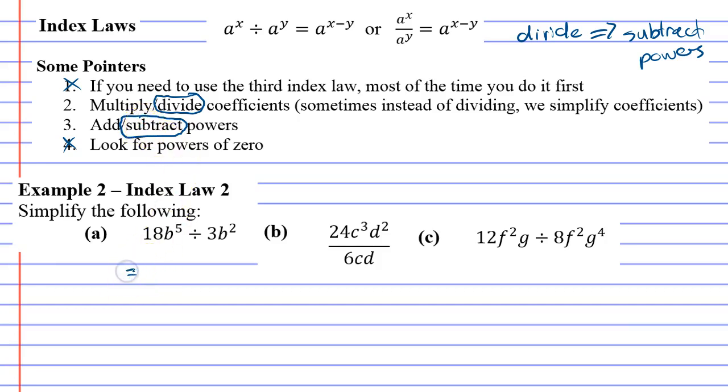We'll start with example two question a, which is our more basic one. Start by looking at the coefficients: 18 divided by 3 is 6. Now we're going to subtract our powers. We've got a base of b for both of them, same base. 5 minus 2 is 3.